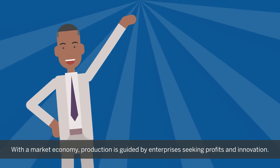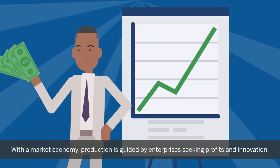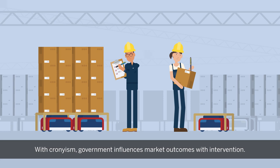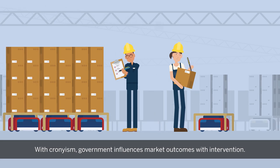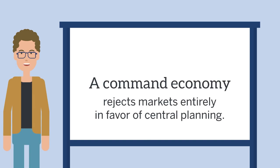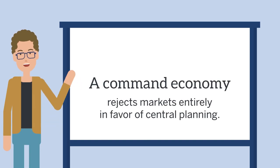With a market economy, production is guided by enterprises seeking profit and innovation. With cronyism, government influences market outcomes with intervention. A command economy rejects markets entirely in favor of central planning.